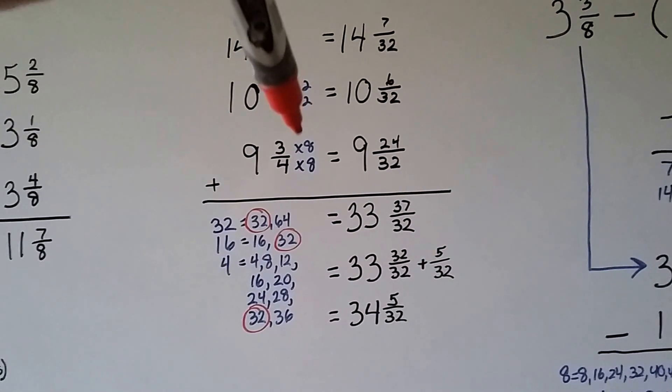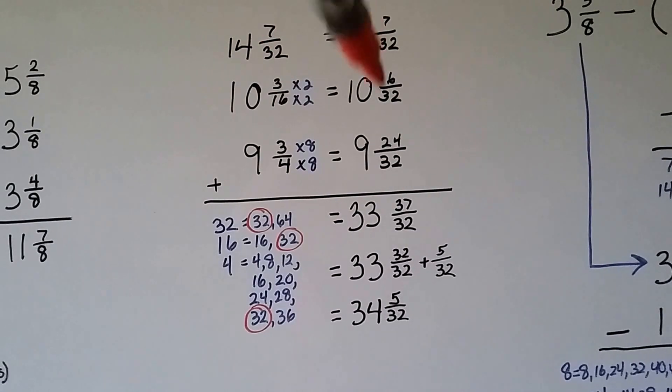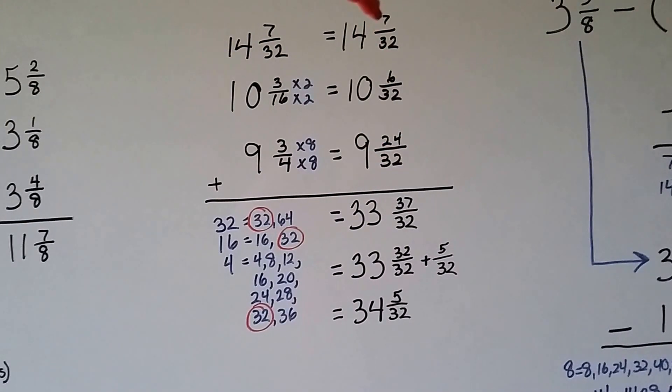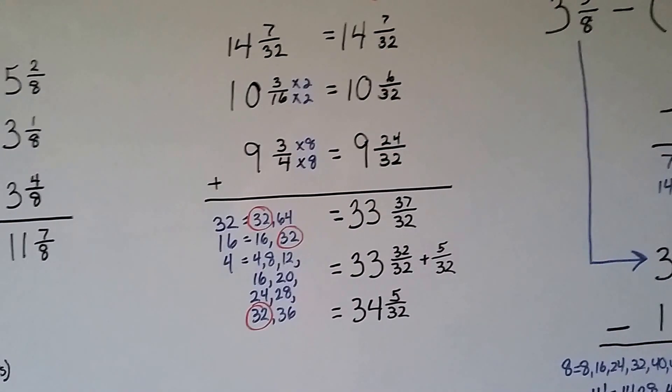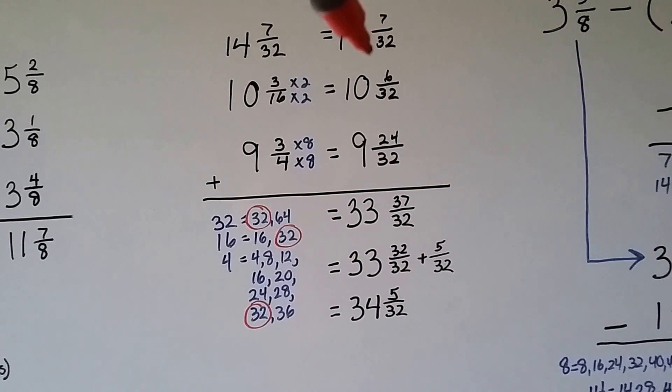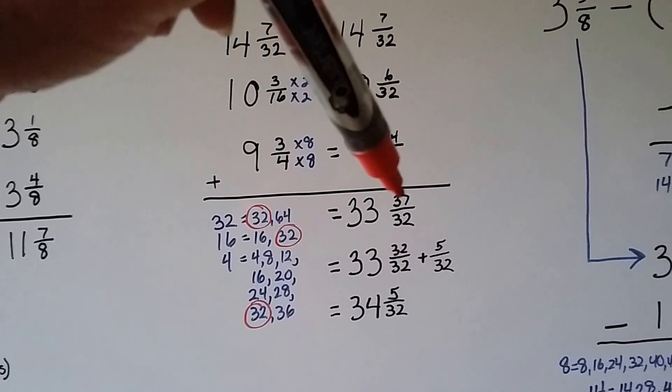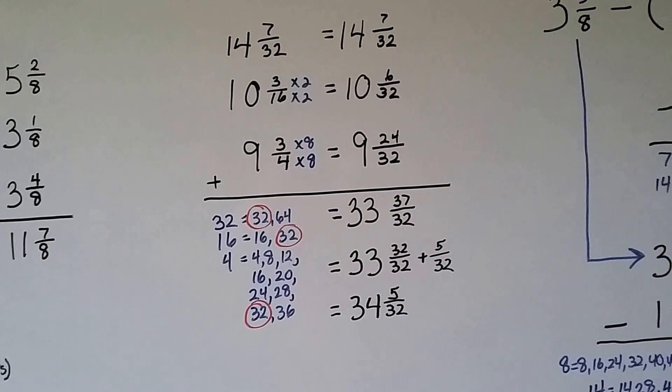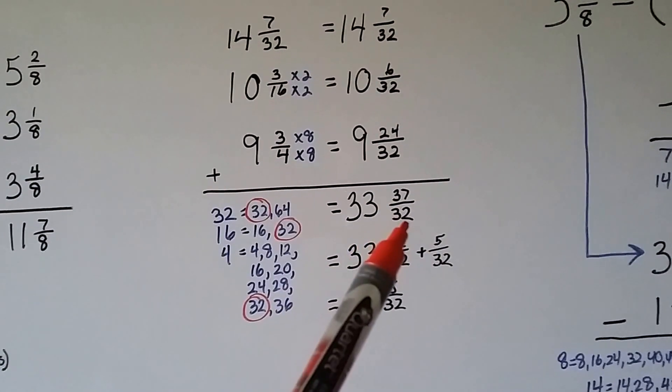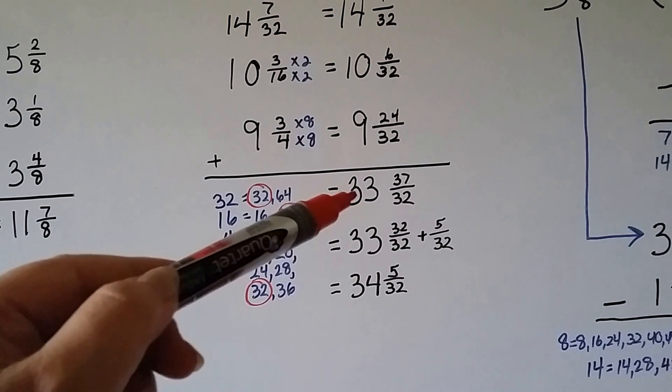This gets multiplied by 2. This gets multiplied by 8. We end up with a nice column with all the same denominators. Now we can add them. And 7 and 6 is 13 and 24 is 37. So we have 37 32nds. And on this side, we have 33.